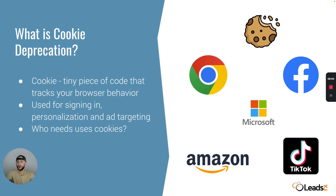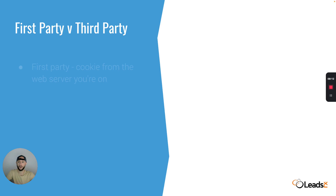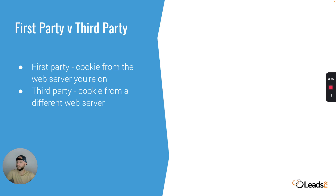Let's talk about first party versus third party cookies. A first party cookie is a cookie that comes from the web server that you're actually on. So if you go to Amazon and sign in, the amazon.com cookie coming directly from Amazon's web servers is a first party cookie. A third party cookie is coming from a different web server. Google Analytics is in fact a third party tracking tool. When you have a blog or an e-commerce store and you put the analytics script on your site, you are using a third party to collect data on your visitors. That is a third party cookie, and that is really what is being regulated away. When we talk about cookie deprecation, it's these third party cookies that are subject to a lot of pain from regulators and the industry itself.